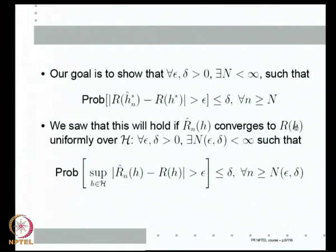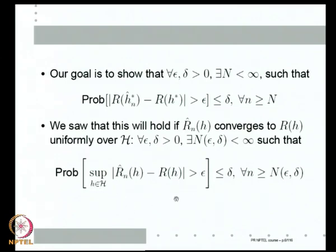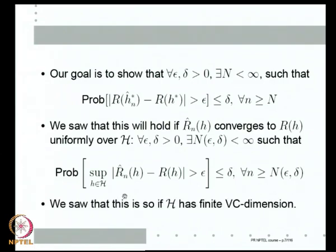Uniform convergence means that the same number of examples works for every single h in the family. That is why the probability that the supremum over h of |R-hat-n-h minus R-h| is greater than epsilon should be less than delta. We also showed that uniform convergence holds if the class of classifiers h has a finite VC dimension.